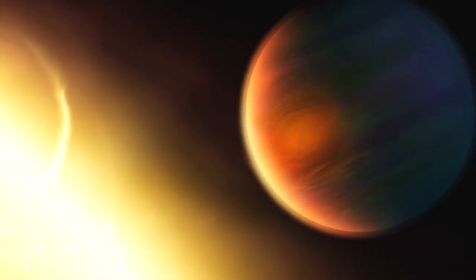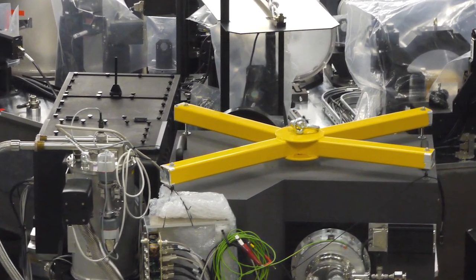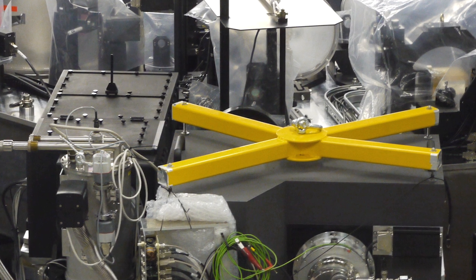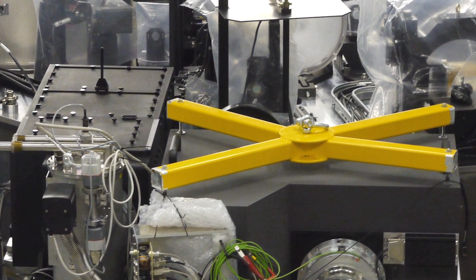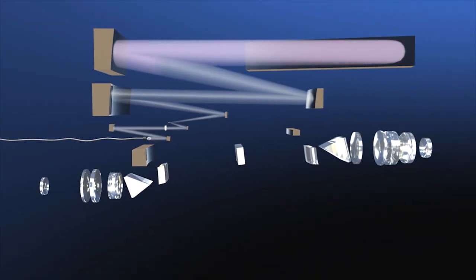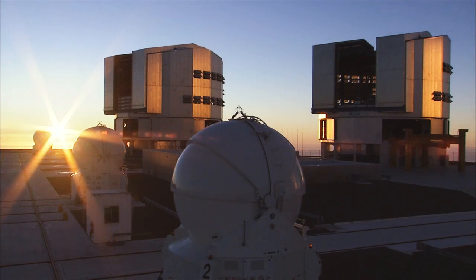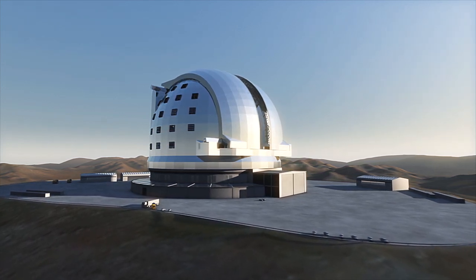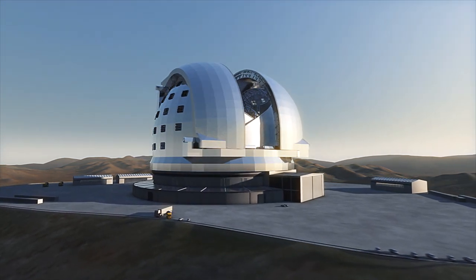Gas giants and sauna worlds are inhospitable to life, but the hunt is not over yet. Soon, the new SPHERE instrument will be installed at the VLT. SPHERE will be able to spot faint planets in the glare of their host stars. In 2016, the ESPRESSO spectrograph will arrive at the VLT and greatly surpass the current HARPS instrument. And ESO's Extremely Large Telescope, once completed, may well find evidence for alien biospheres.